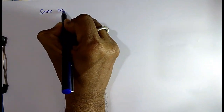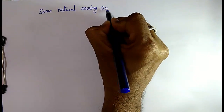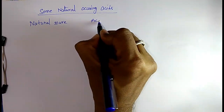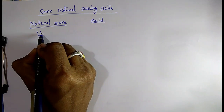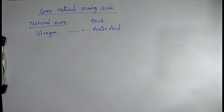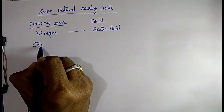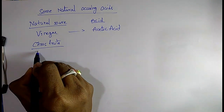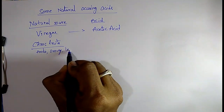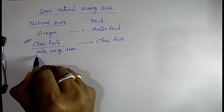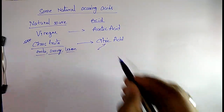Now some naturally occurring acids — very important for exams. Vinegar contains acetic acid. Citrus fruits like amla, orange, and lemon are sour in taste because they contain citric acid. Citric acid is found in citrus fruits.